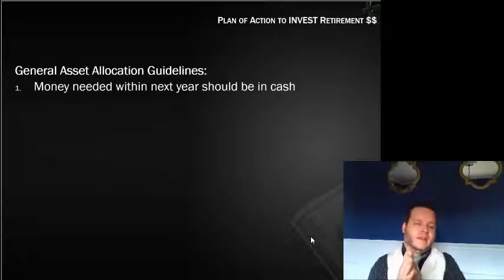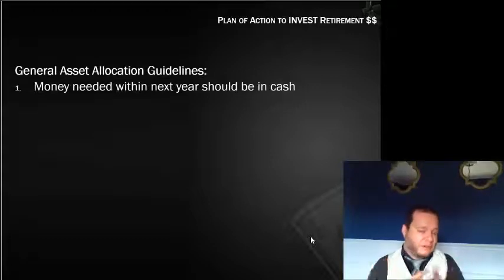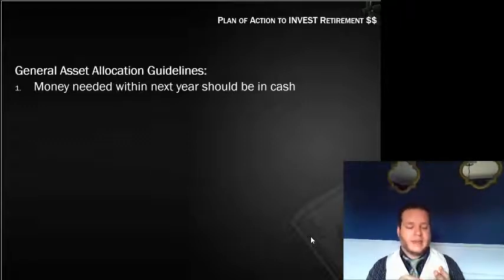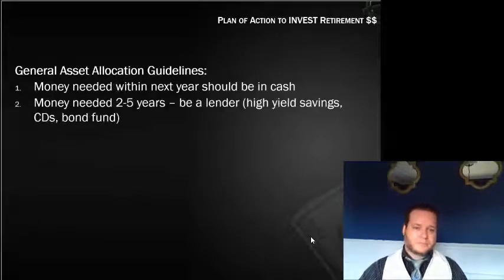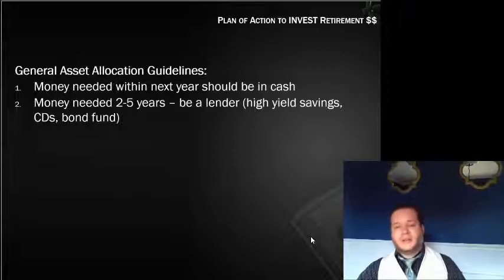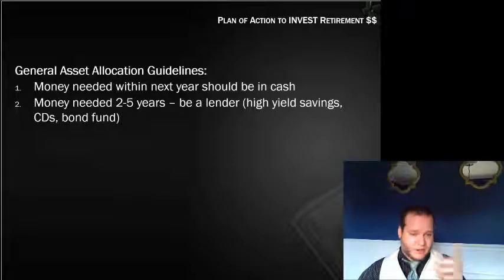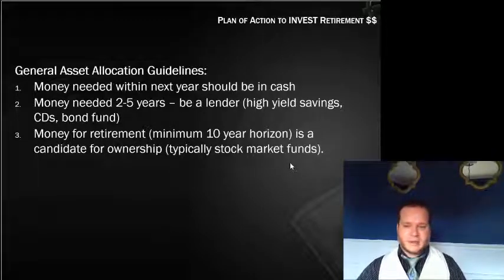How much money do you need where? Money you need in the next year should be in cash — your bills, emergency fund, and short-term goals like a Disney World trip. You need to not risk that money. Money you need in two to five years: put that in a high-yield savings account, certificate of deposit, or a low-risk bond mutual fund. You can take a little more risk but not much, since you don't have time to recover losses. Money you'll hold for ten years or longer — that's where you want stocks through a stock market mutual fund.